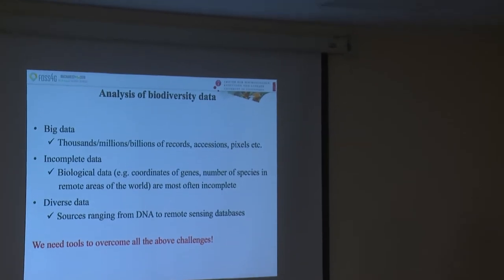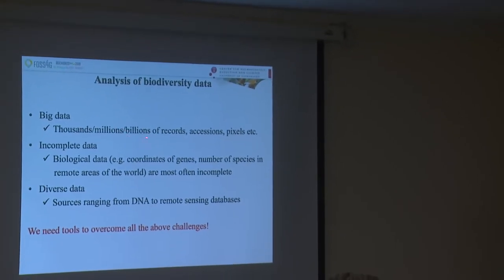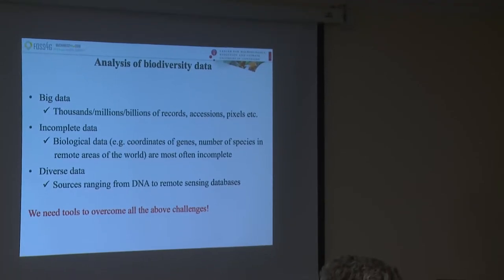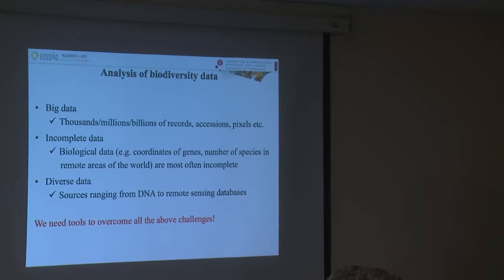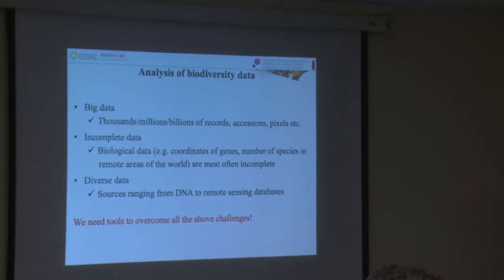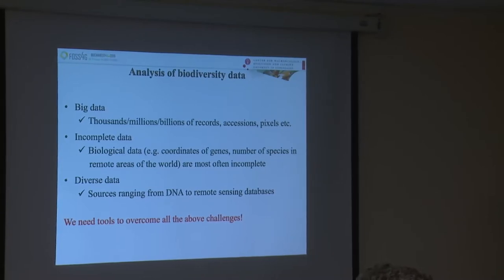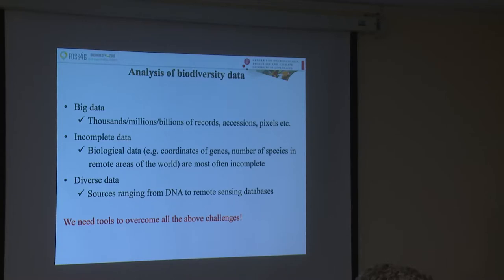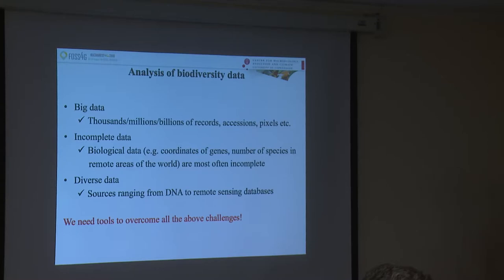As a summary of the data we use, we're talking about thousands and sometimes even billions of records, accessions, and pixels in the case of satellites, waiting for us to analyze. Unfortunately, in biology and biodiversity research, those data are mostly incomplete — for many aspects of life, we have no clue how it's distributed on the planet. Genetic diversity requires a lot of sampling and sequencing effort, so we don't have this information for around the world. We also have very diverse data sources, from genetic databases to satellites, and we need tools and pipelines to analyze all this diversity of data.